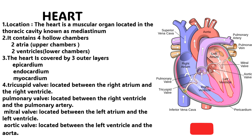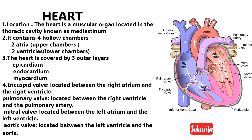Now we are going to see about the important organ of the cardiovascular system, that is the heart. The heart is a muscular organ located in the thoracic cavity known as the mediastinum. The heart contains four hollow chambers: two upper chambers and two lower chambers. Upper chambers are called atria or atrium, and lower chambers are called ventricles.